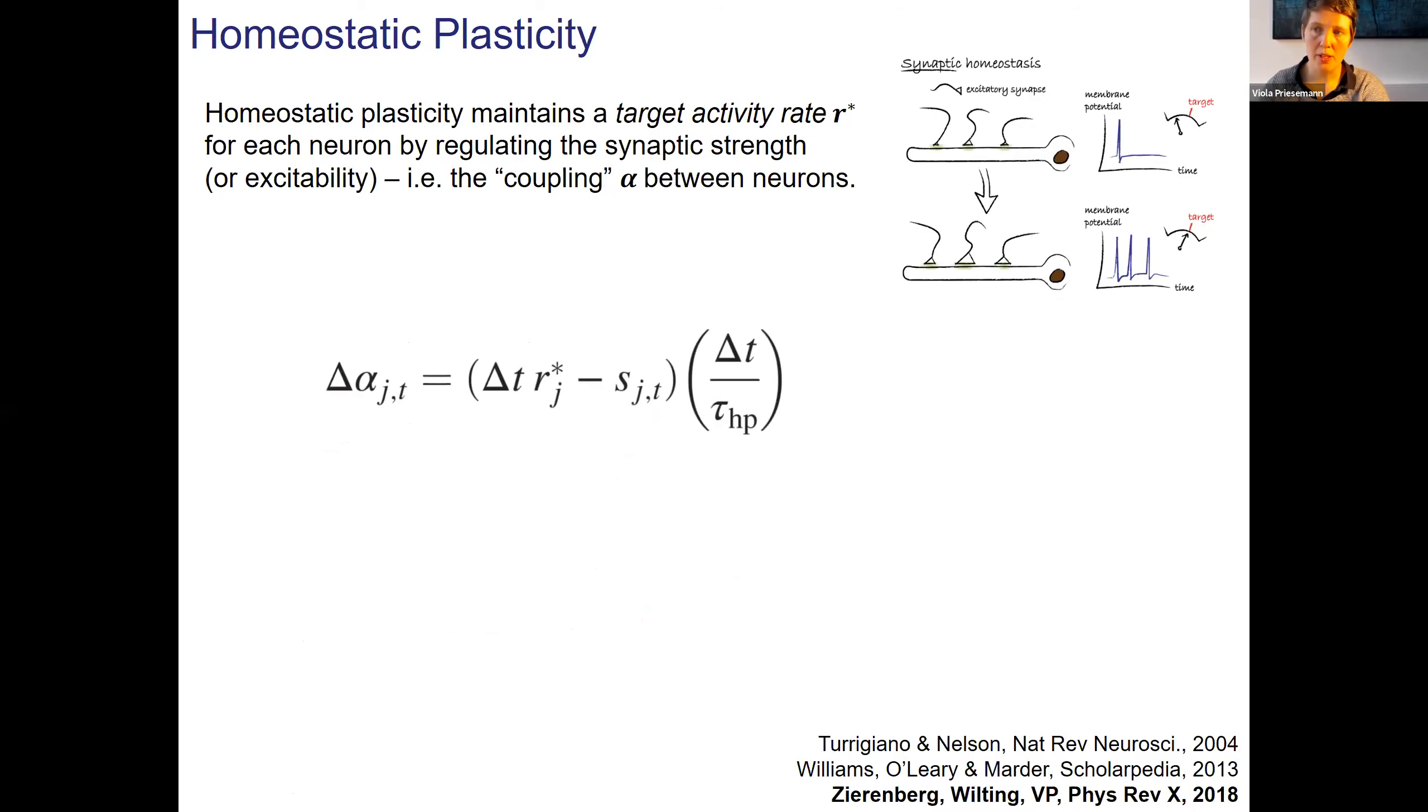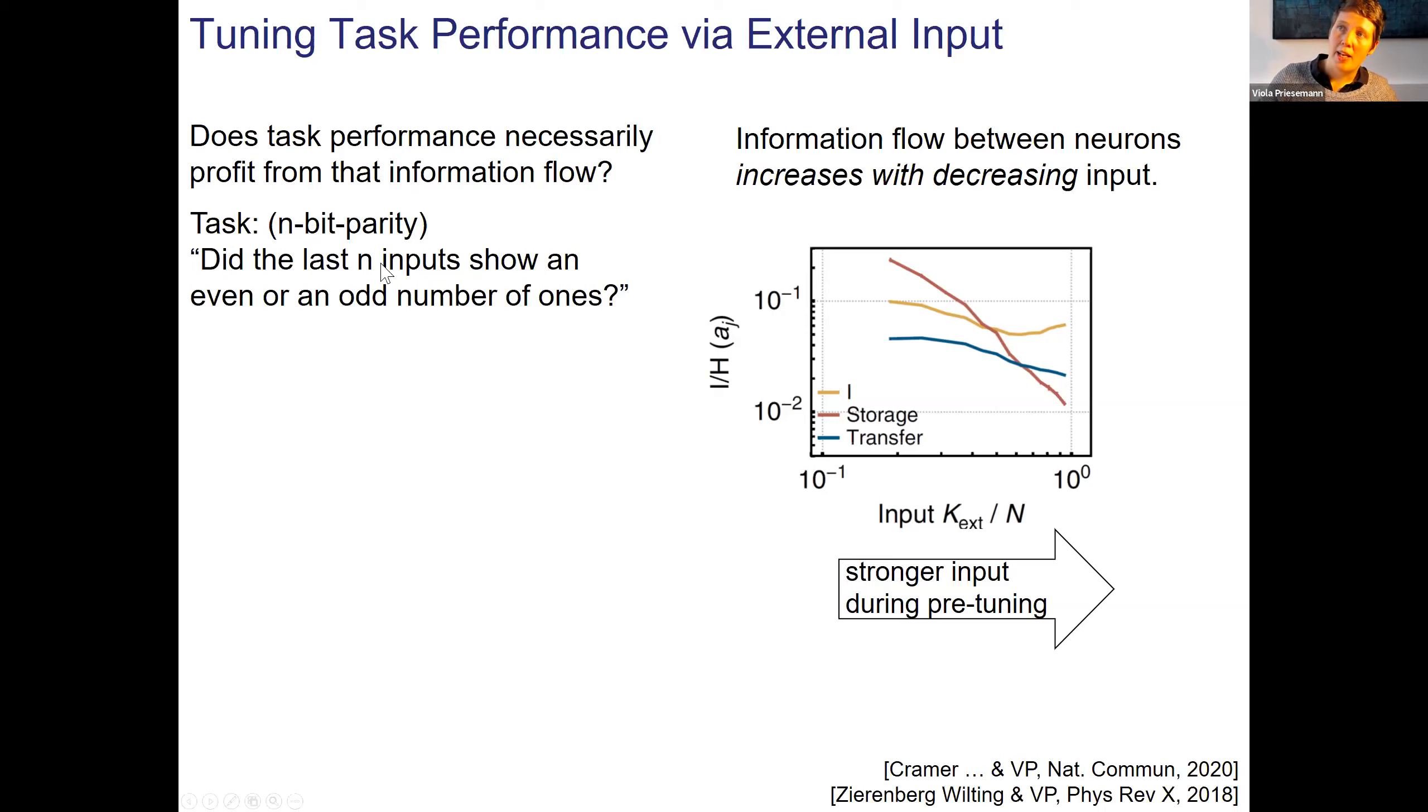Now we have a tool also for the neuromorphic chip to set its working point from more continuous to more bursty by only changing the strength of the external input that we apply. We also have a prediction, that's more for the medical audience, that if this really is the correct explanation, then one could be able to tune also in vitro networks to a more continuous state.